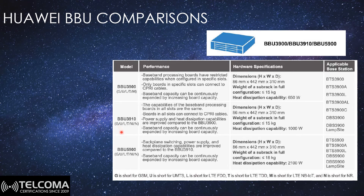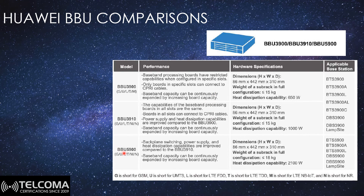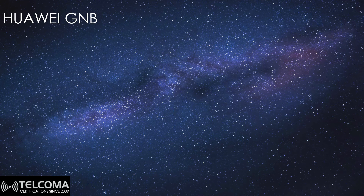The BBU 3910 adds 5G support for the first time, supporting GSM, UMTS, LTE FDD, LTE TDD, Narrowband IoT, and 5G New Radio. The BBU 5900 is a better version than the 3910, supporting everything: Narrowband IoT, LTE FDD, LTE TDD, GSM, UMTS, and New Radio. In general, the Huawei baseband unit supports all technologies as does the Nokia Air Scale, but Huawei has many versions of the BBU while Nokia consolidates under the single Nokia Air Scale brand.